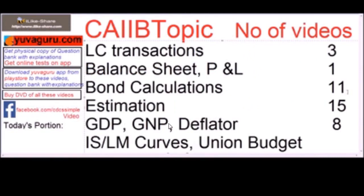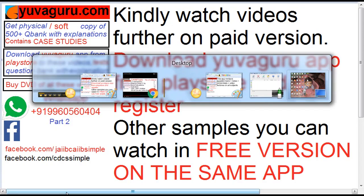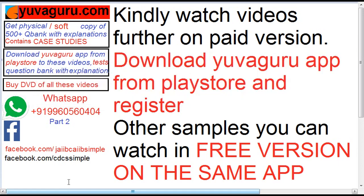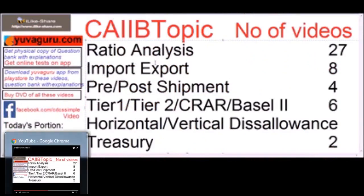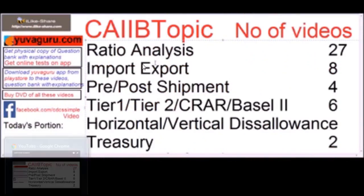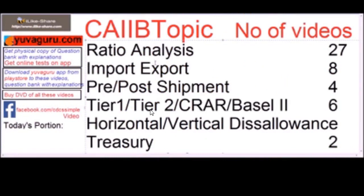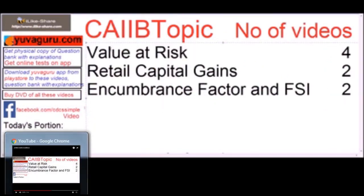Additional topics include GDP, GNP deflator, IS-LM curves, union budget, Keynes' theory, ratio analysis, import-export, pre- and post-shipment finance, Tier 1 and Tier 2 capital, CRAR, Basel 2, horizontal and vertical disallowances, and value at risk.